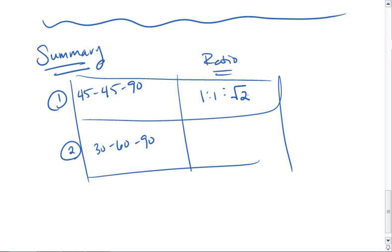If we have a 30-60-90 triangle, our ratio is 1, square root of 3, 2.